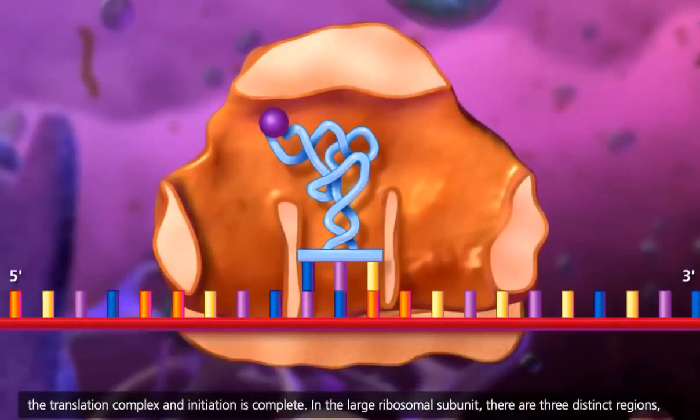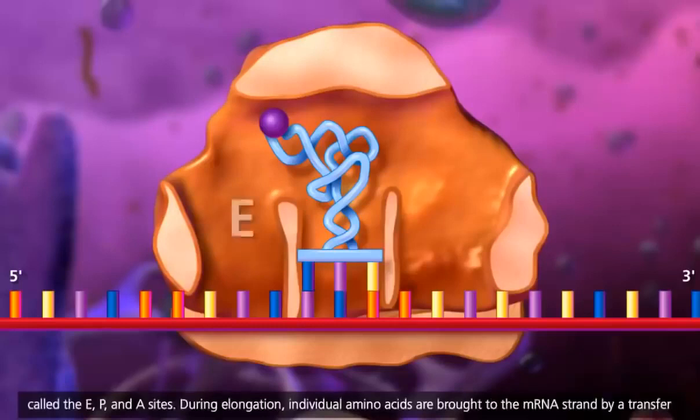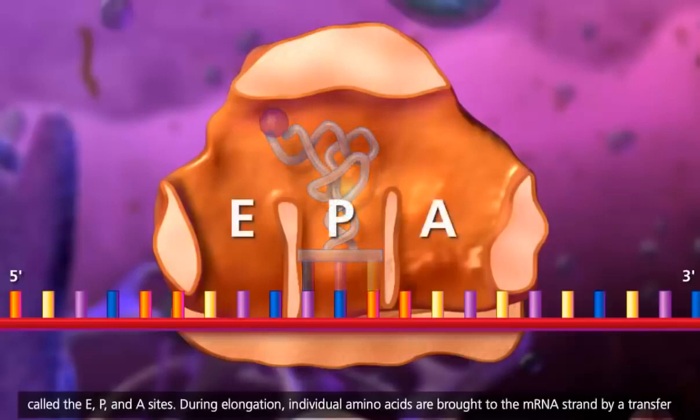In the large ribosomal subunit, there are three distinct regions called the E, P, and A sites.